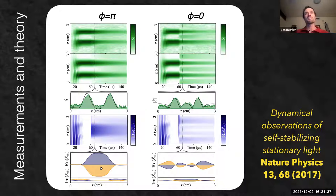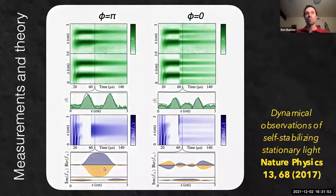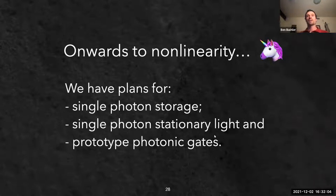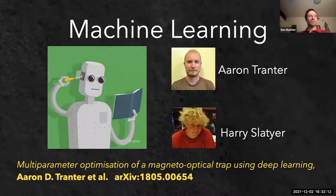If we can trap a quantum state in the stationary light configuration, it could become the basis of a non-linear physics scheme. Because light is trapped and circulating, interacting with atoms for longer times, we can enhance cross-phase modulation. Plans include single photon storage - which I'll describe now - and then combining single photon storage with prototype photonic gates.